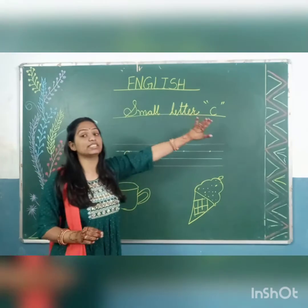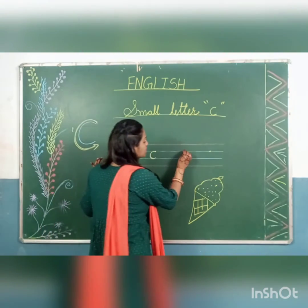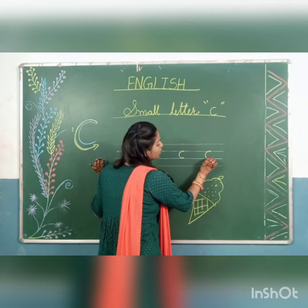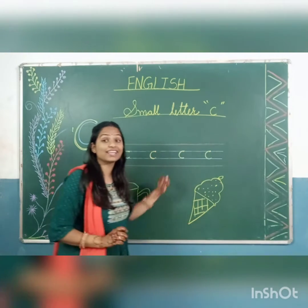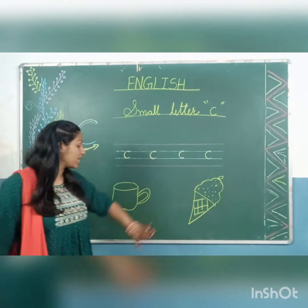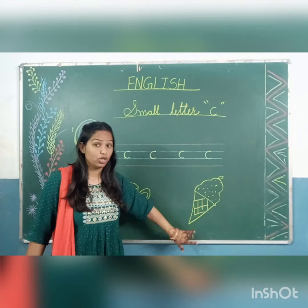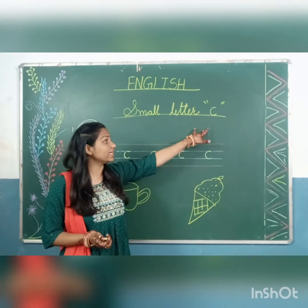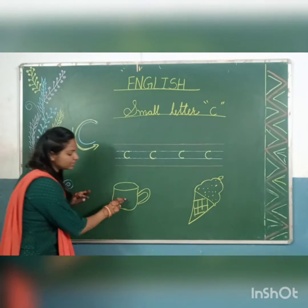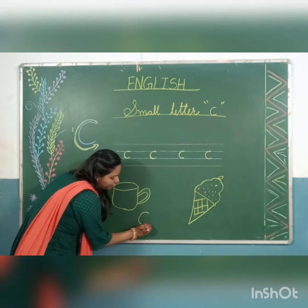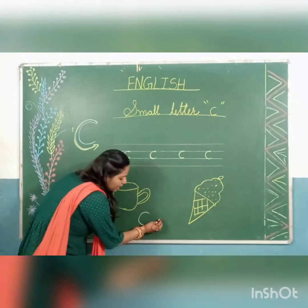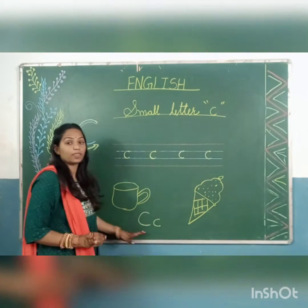Small letter C — C for cup, C for corn, C for cake. This is our C letter. These are our objects for small letter C. For the capital letter C, we also make a left curve. This is our capital C and this is our small C.